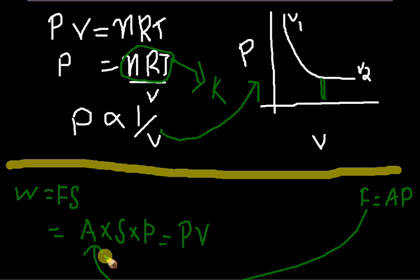And I am forming a new equation for work that is P into V, the product of pressure and volume. How did volume come here? We know that area into displacement can be written as volume. That's why it came as volume. So, work done is equal to P into V.